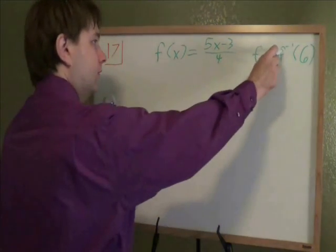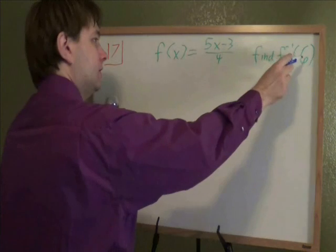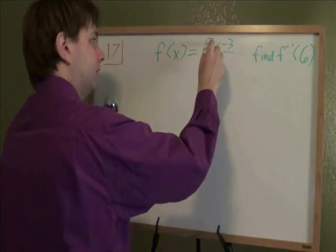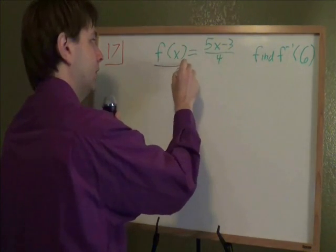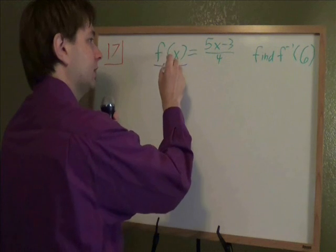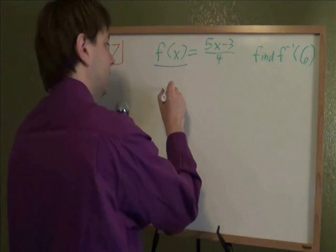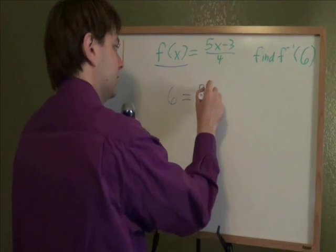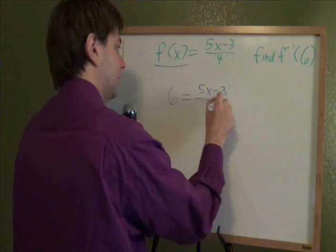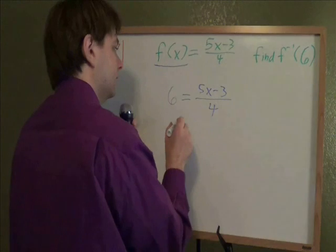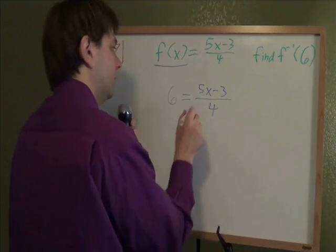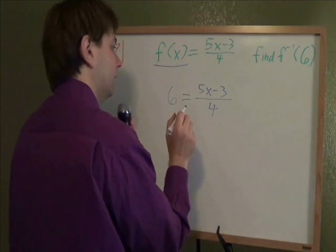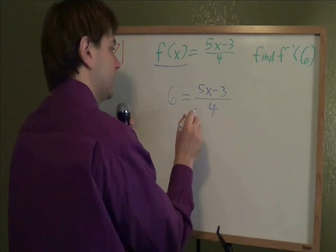When a problem asks for f inverse of a number, that means you take that number, and instead of plugging it in for x, you plug it in for the y, or for the f of x. So where we used to have f of x, we put 6 instead. And instead of plugging in for x, we solve for x now. So 6 equals 5x minus 3 over 4. We need to get the x by itself. First step, let's get rid of fractions. To get rid of a divide by 4, we will multiply by 4.